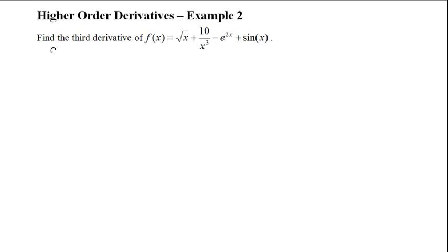The first thing I'm going to do is rewrite f(x) so that we can see the powers a little more clearly. For the first term, square root of x can also be written as x to the power of a half. For the second term, 10 over x cubed — 1 over x cubed can be written as x to the power of negative 3, so this term becomes 10 times x to the power of negative 3. The last two terms can stay the same.